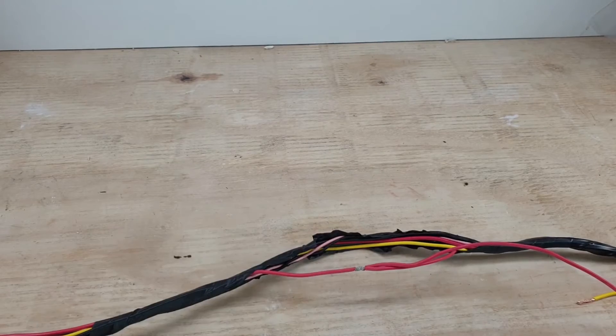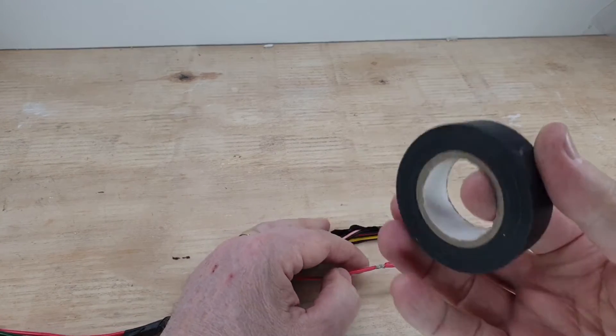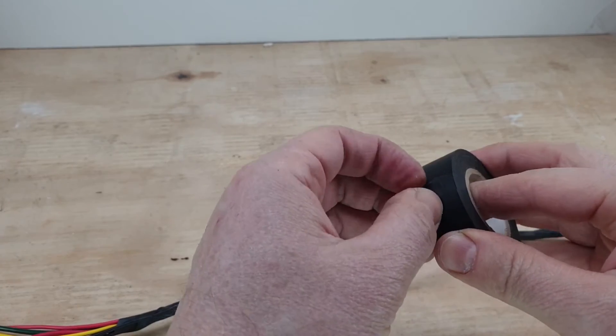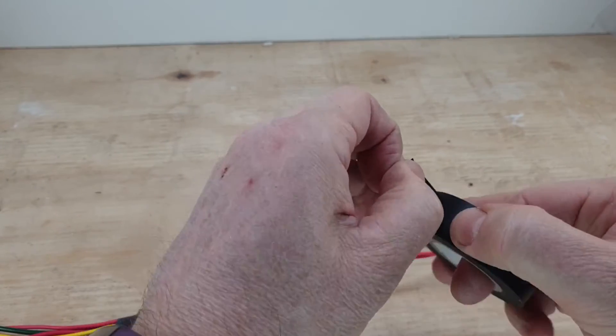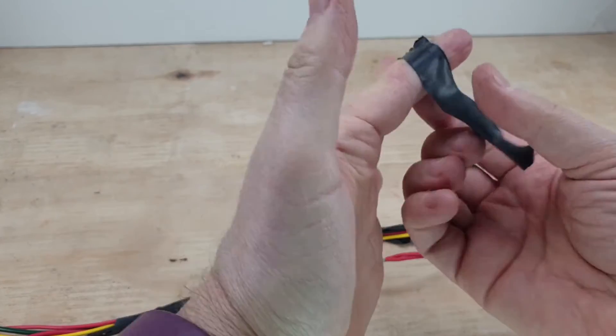Now we've got to insulate this joint. If you're working out in the cold, just a little tip: keep insulating tape in your pocket. Just makes the glue a lot more sticky and the tape a lot more stretchy.